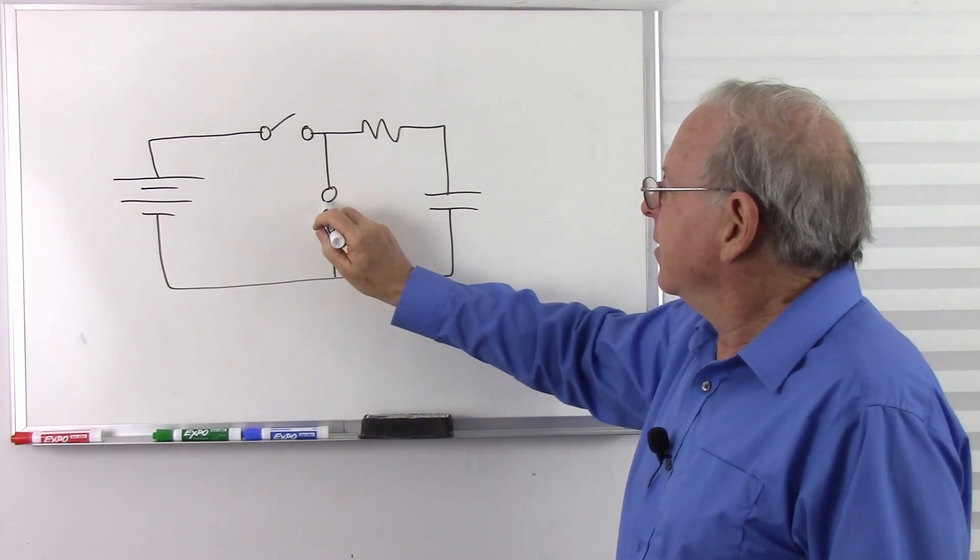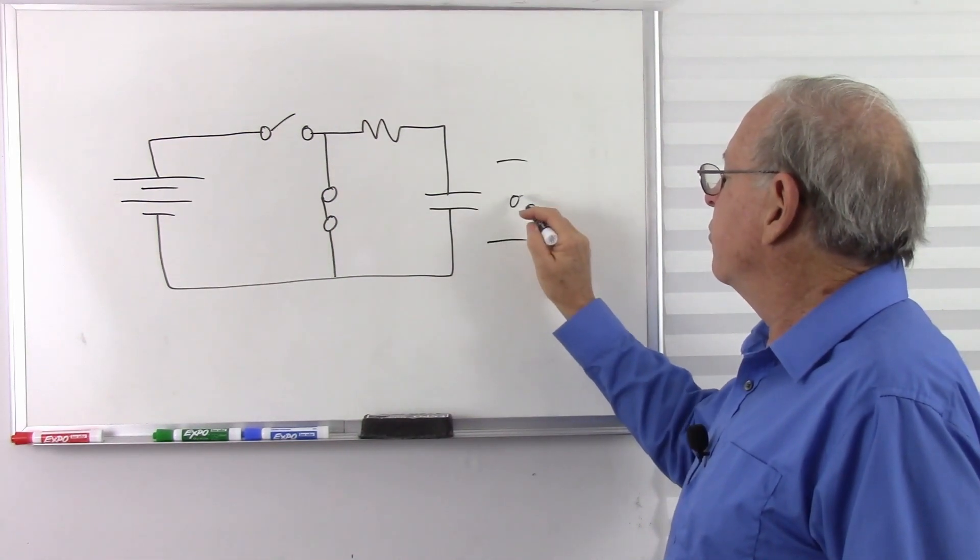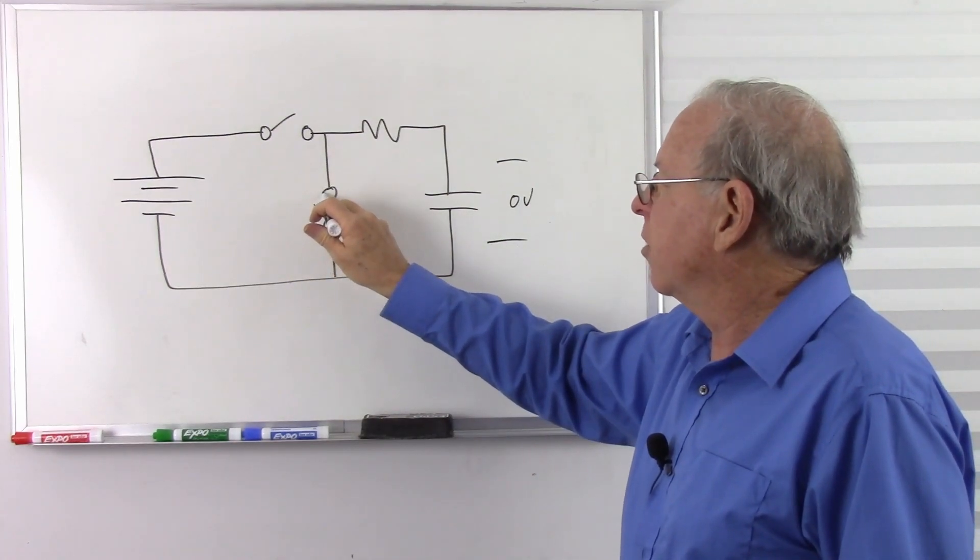I'm probably not going to need it for this explanation, but I usually put it there for discharging the capacitor. Let's go ahead and discharge that capacitor. Make sure there's absolutely no voltage across it. Zero volts, completely discharged.